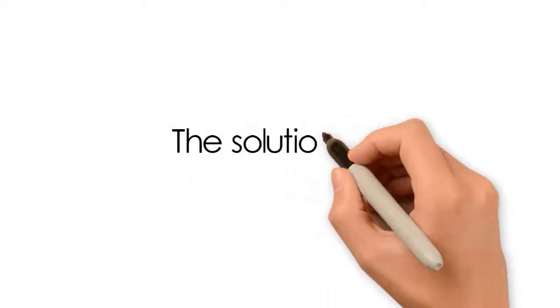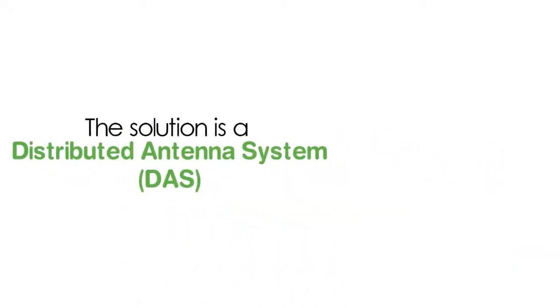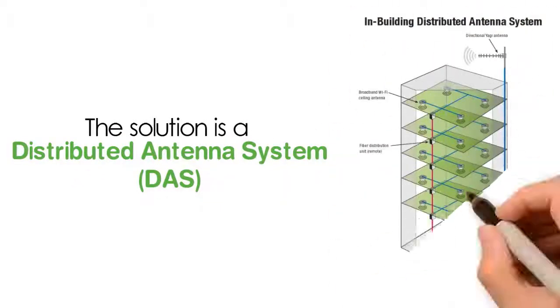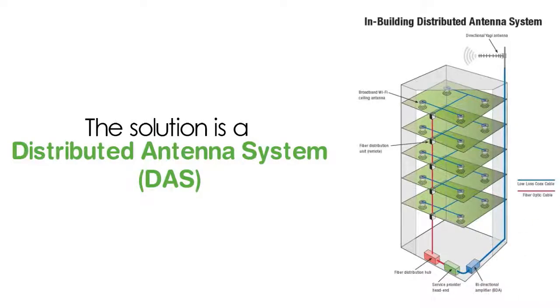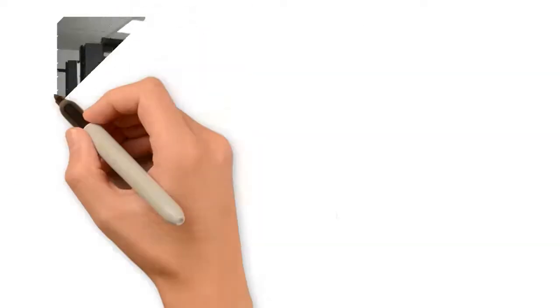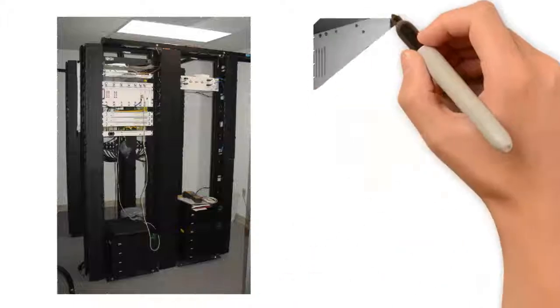The solution is a distributed antenna system or DAS, and it consists of advanced electronic equipment, fiber optic cable and small inconspicuous antennas that are installed in large buildings to provide all these services.